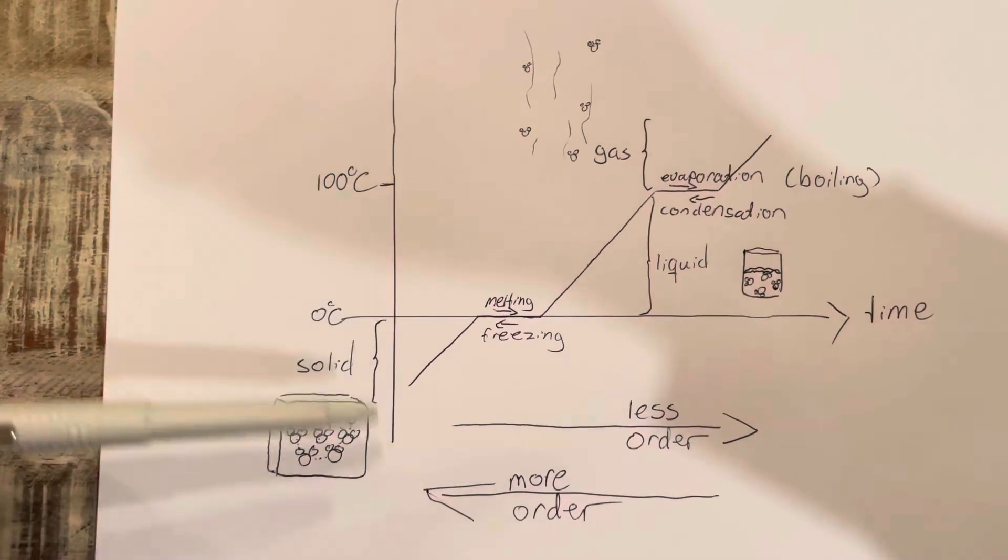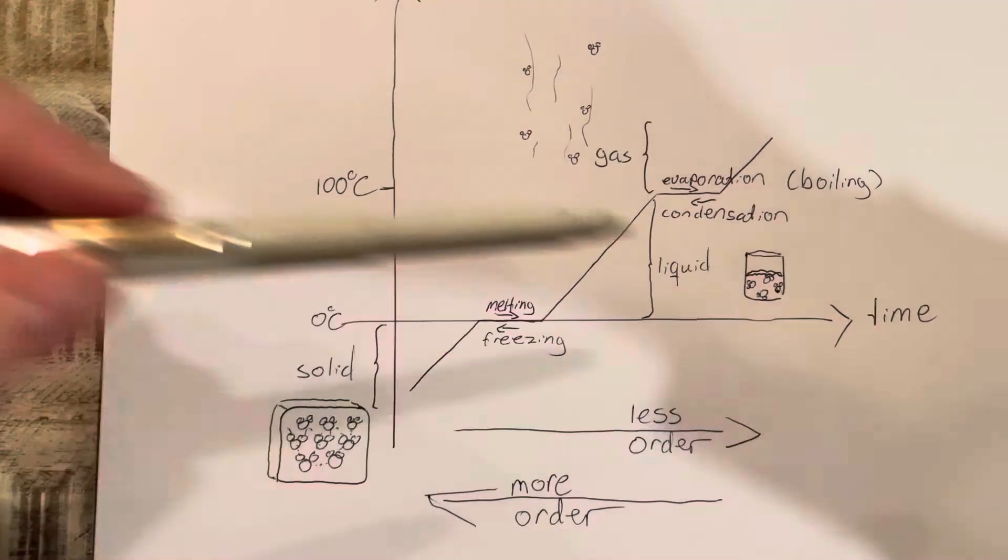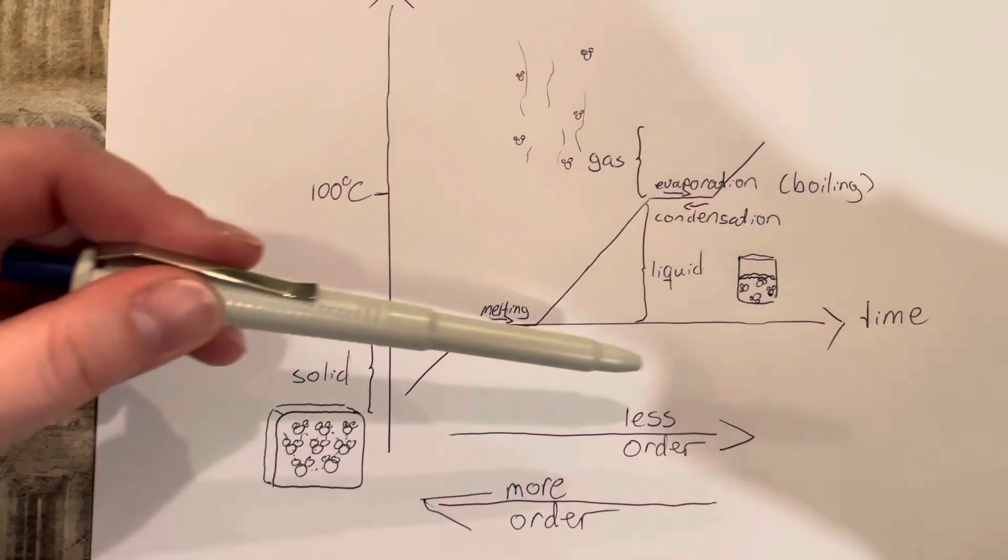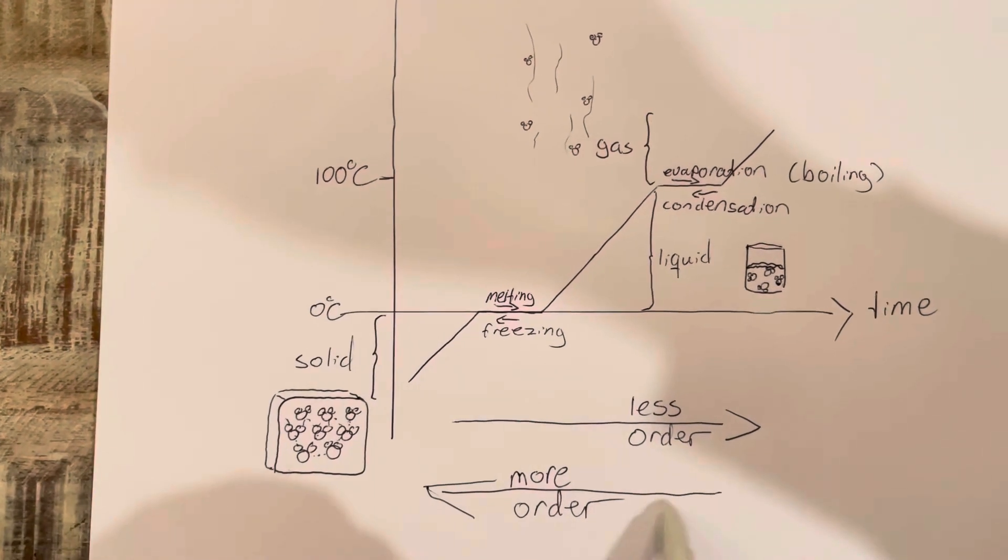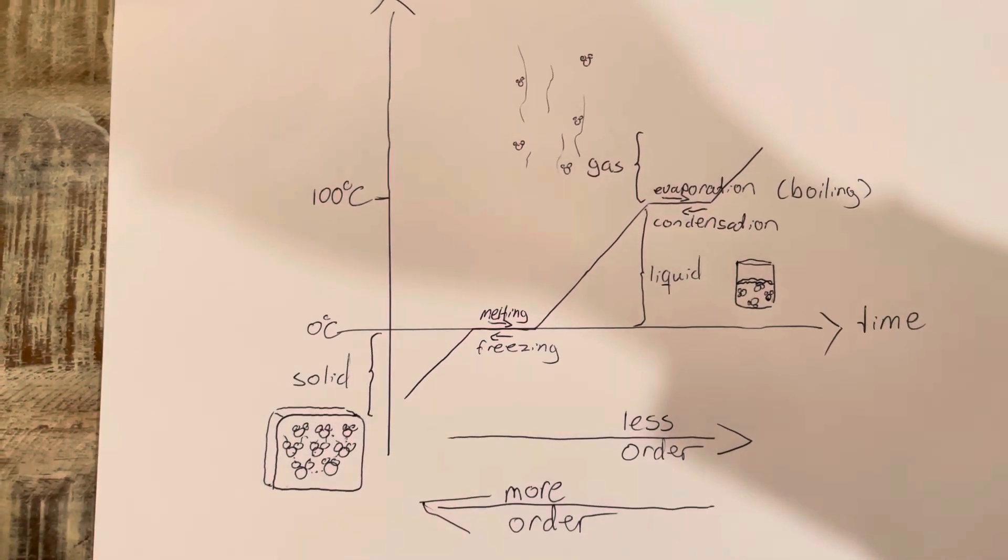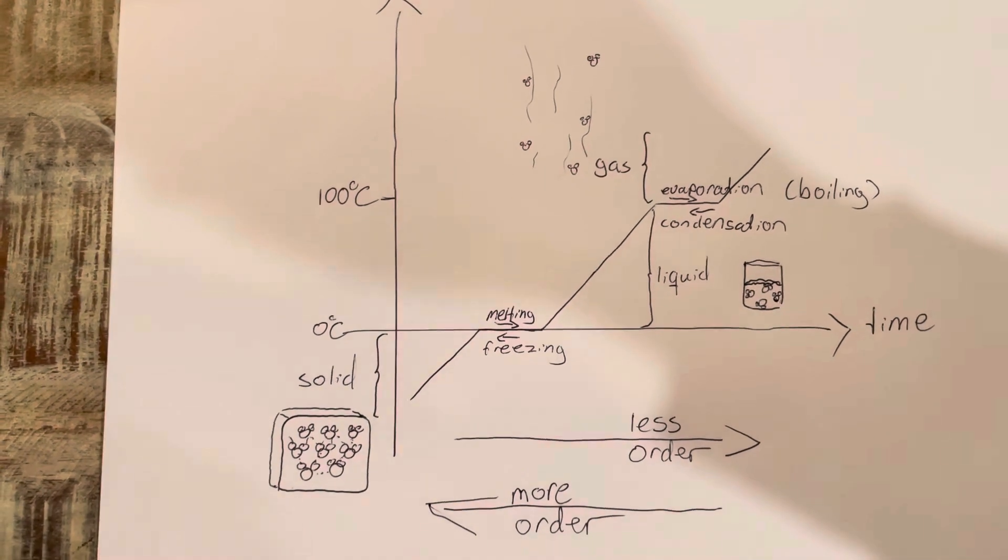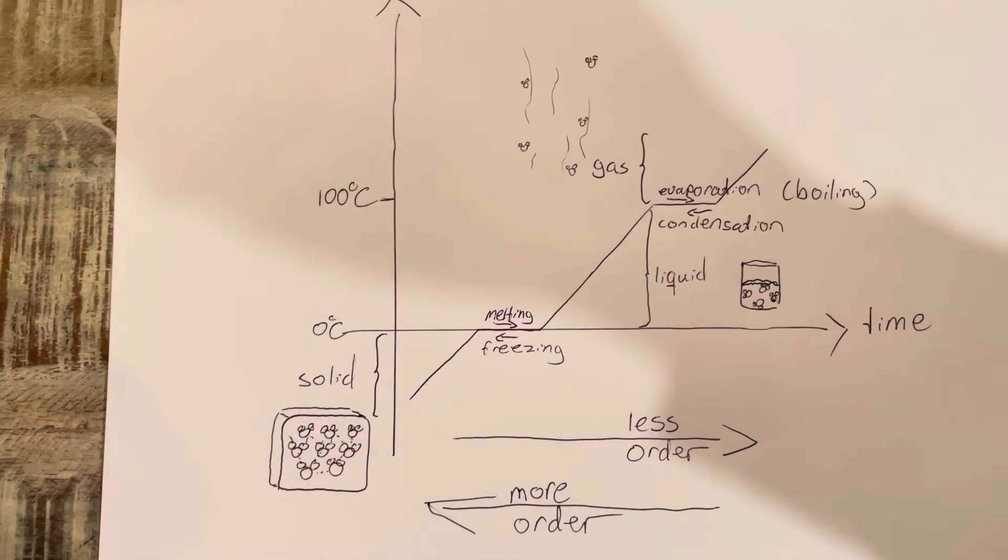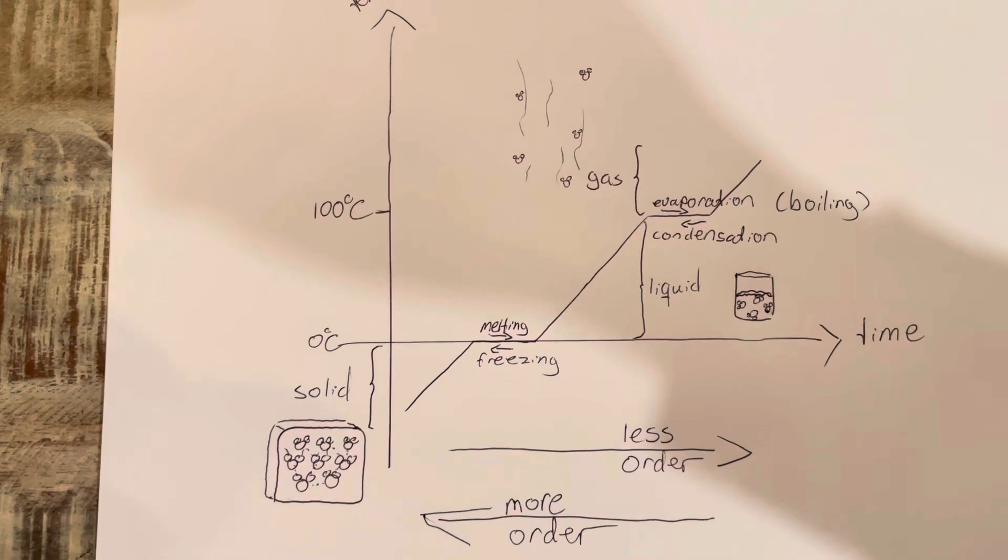If you're going this way on the curve, the molecules get in less order. If you go this way towards solid, they're going to be in more order. And that's the information you can take from a heating curve of water.